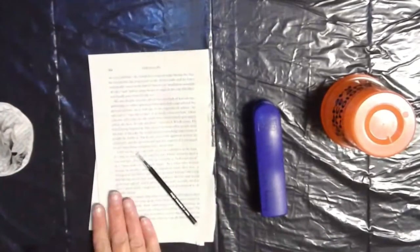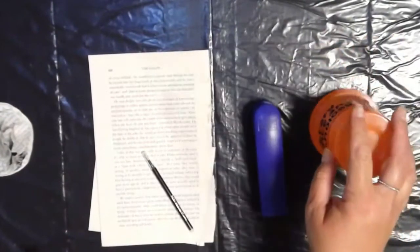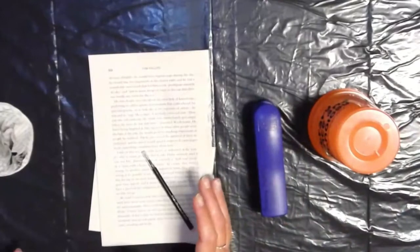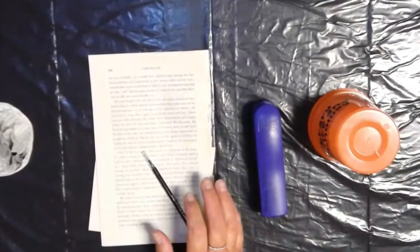All you really need for this is the book pages, a pen, and a cup to mark out your circle size, or if you've got a circle punch or something else that you want to use, just to create some circles.